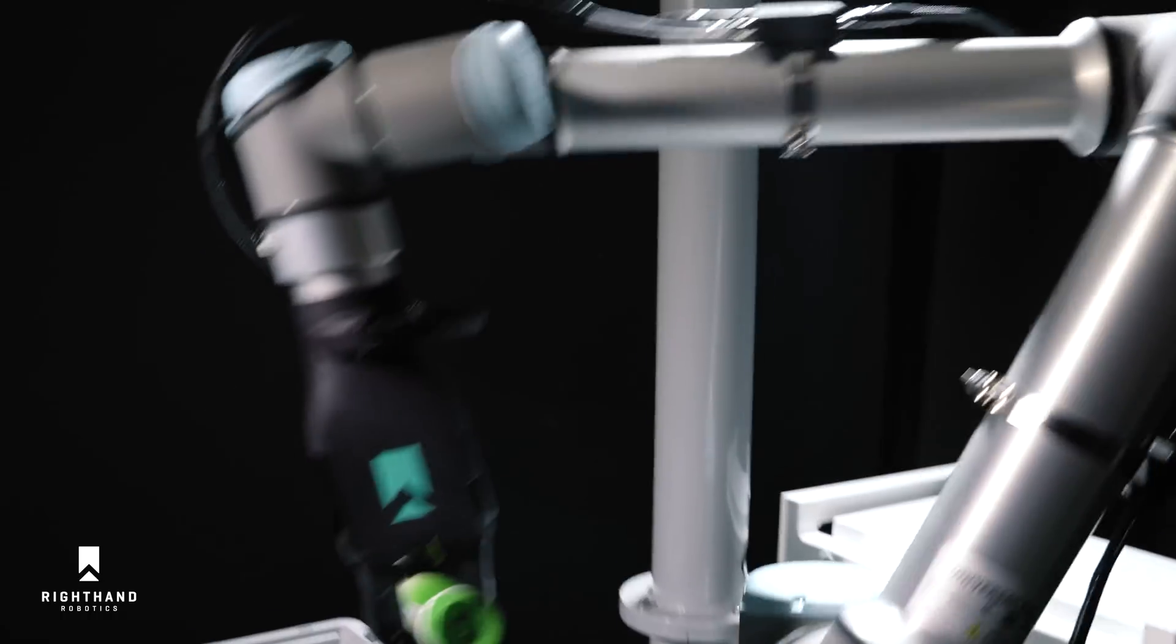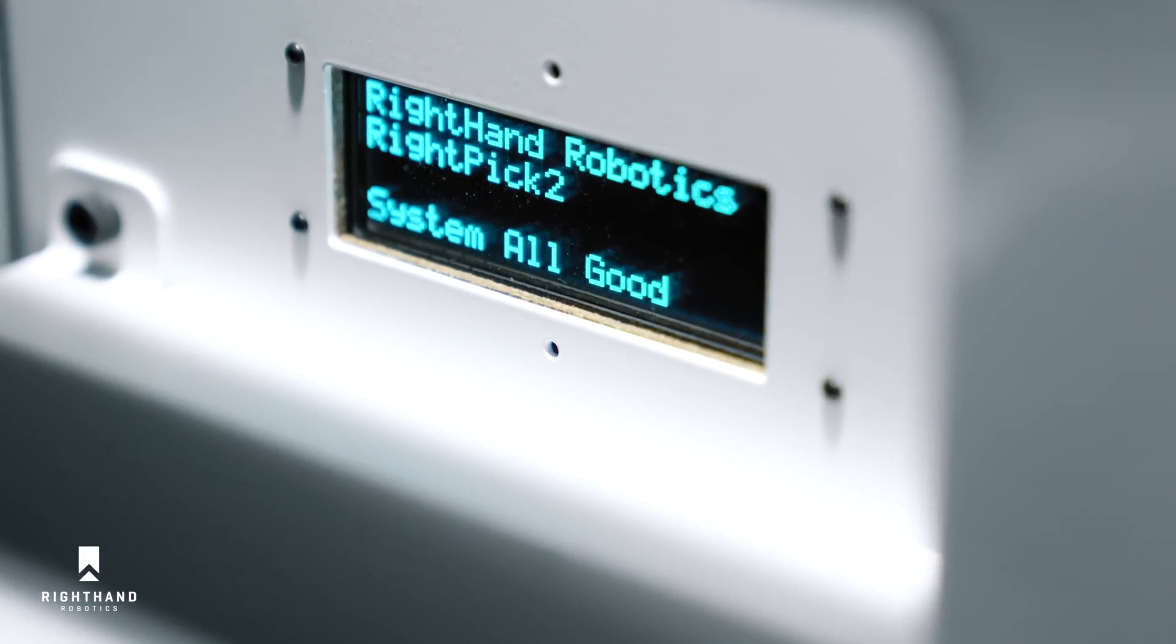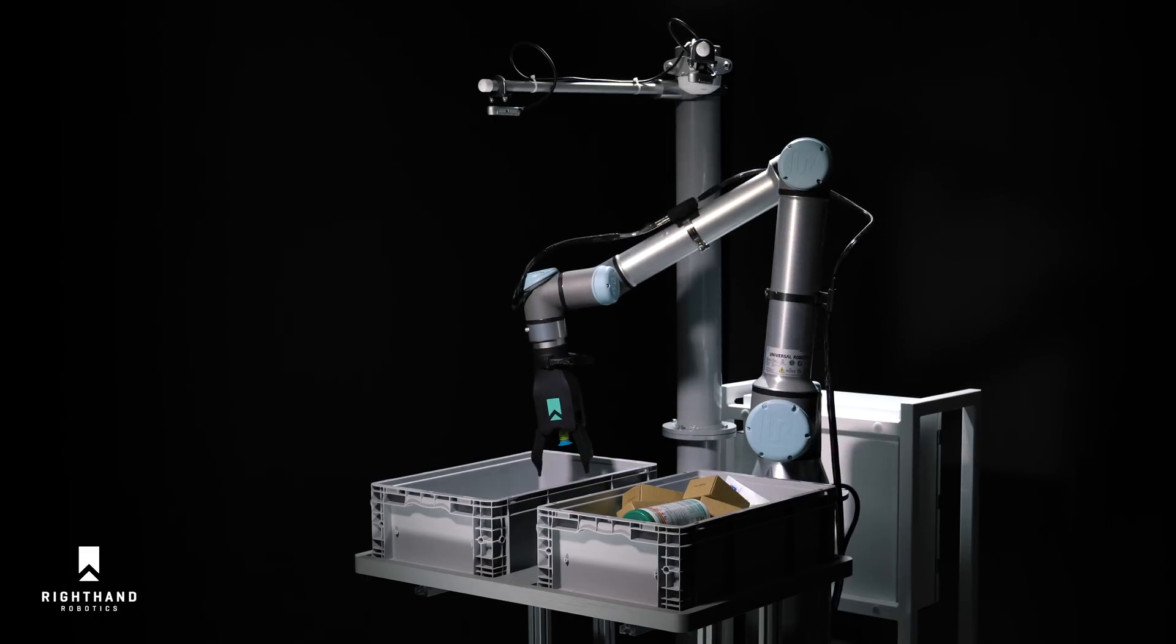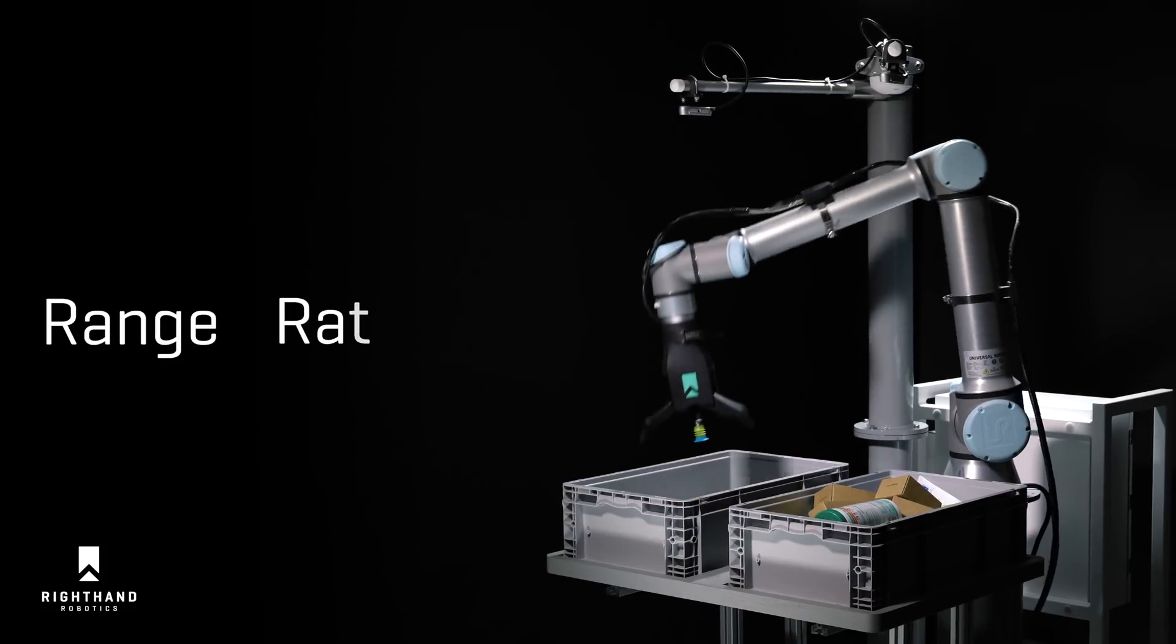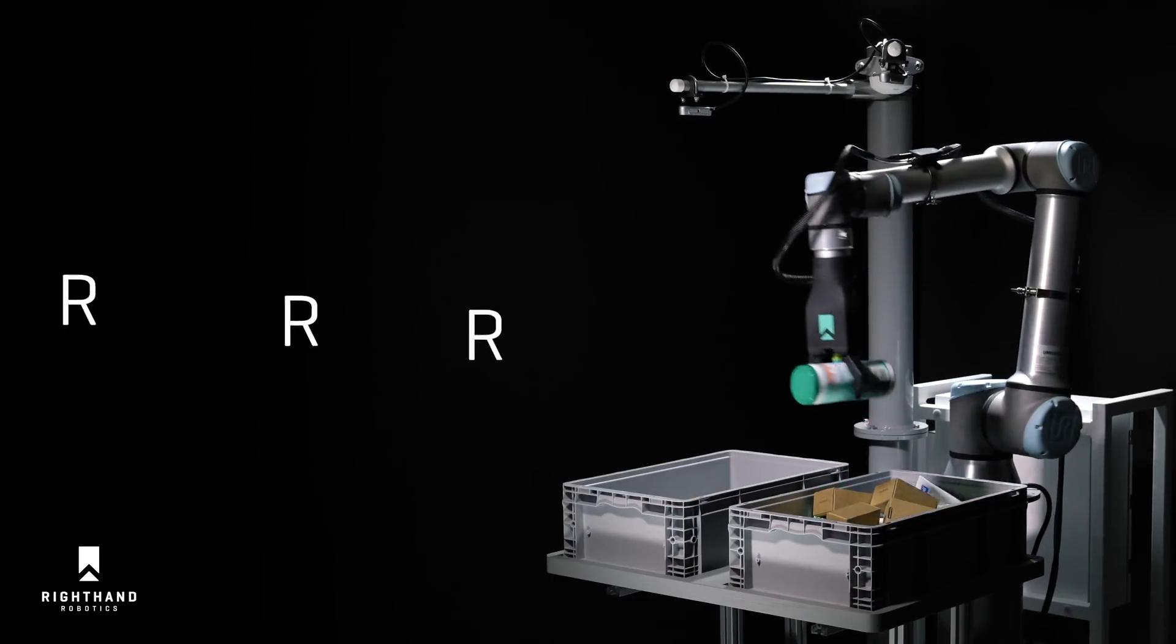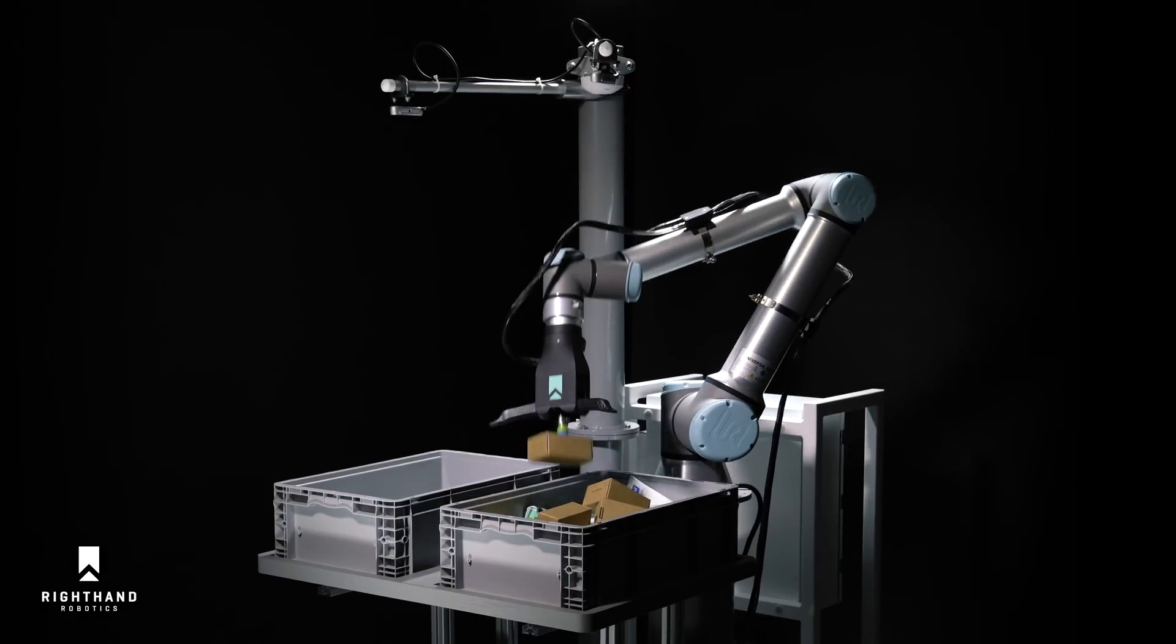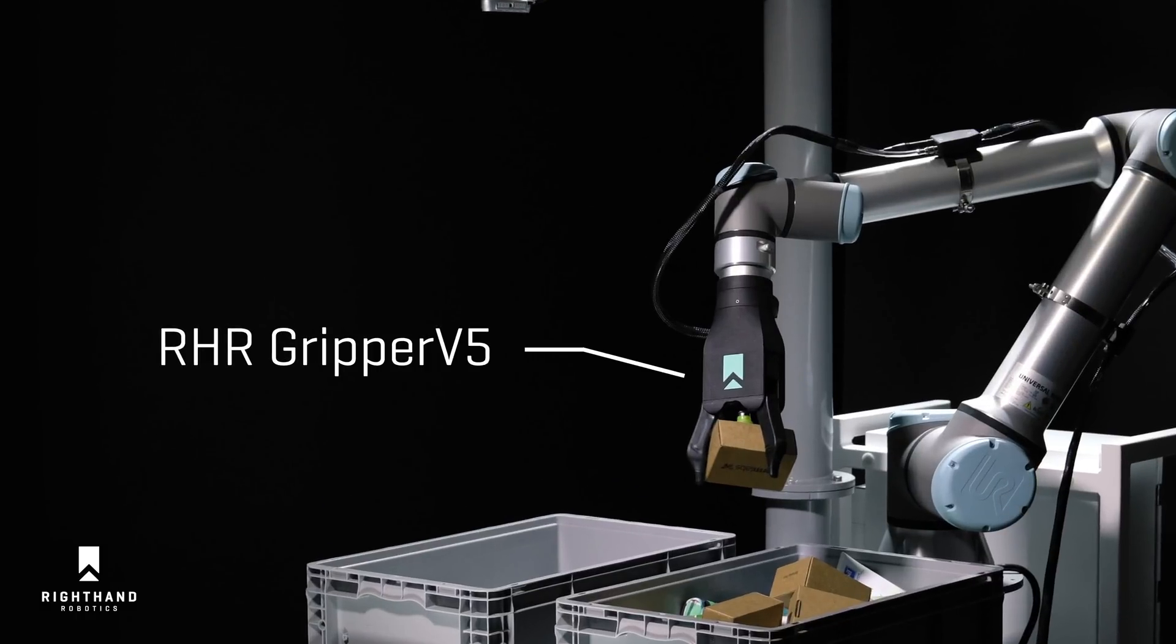Introducing RightPick 2, the first autonomous piece-picking solution for modern intralogistics with the range, rates, and reliability. The three R's of robotic piece-picking, leveraging RightHand's Gripper V5, an intelligent grasping system now with two kilogram payload capacity.